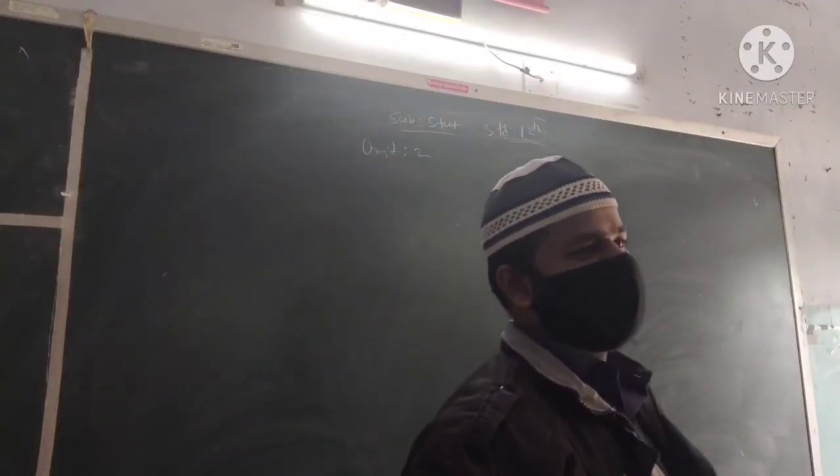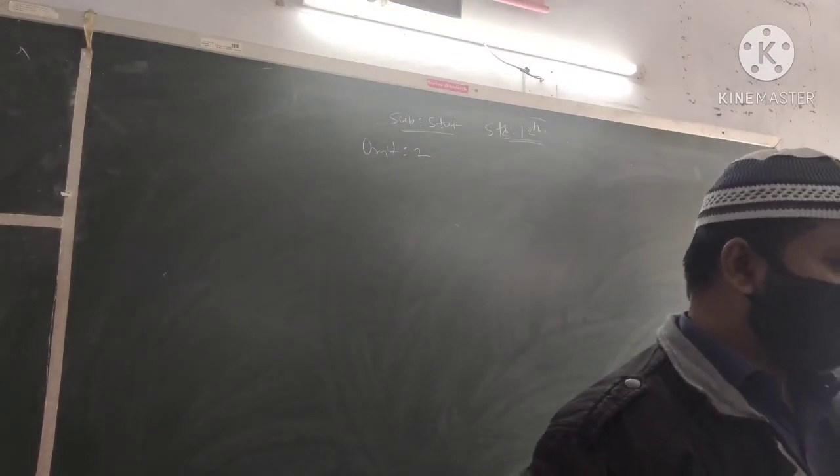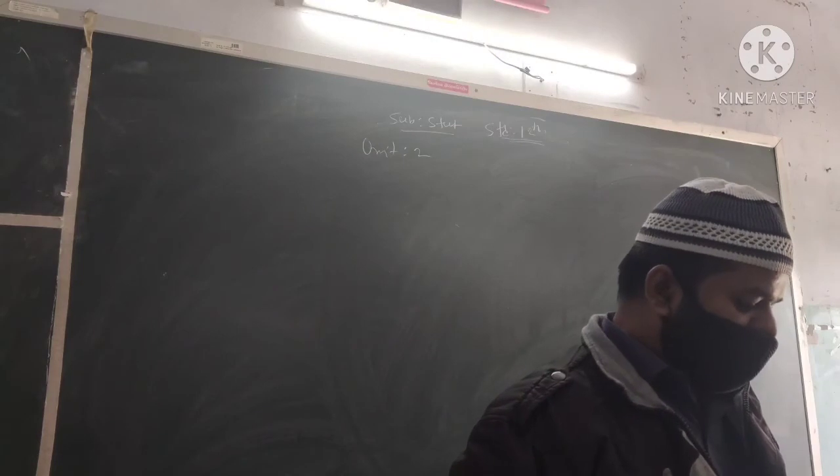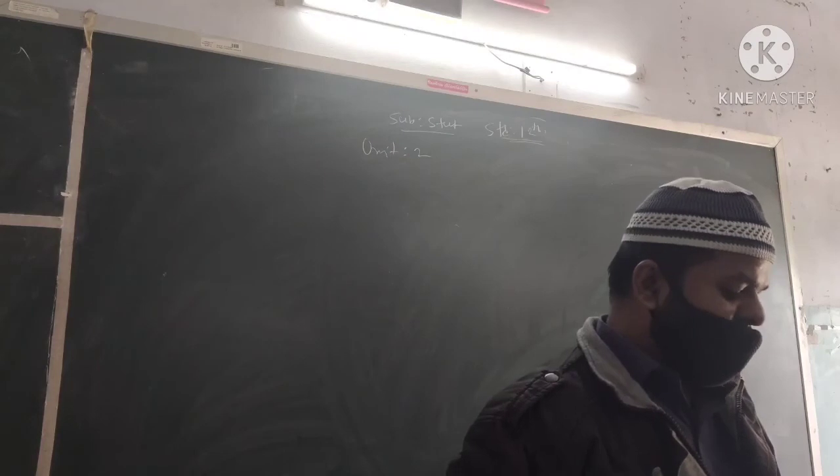Hello students, today we will have subject stats, Chapter Number 2, Random Variable and Discrete Probability Distribution. Last time we selected section 3 sums. Today we will have 4, 5, 6 and 7. We will have 4 sums. Sum Number 4.